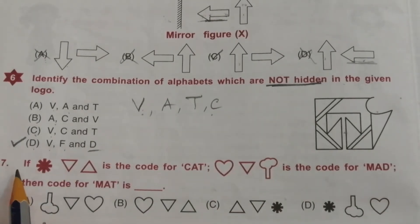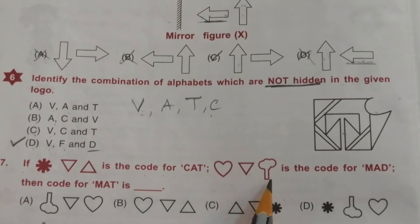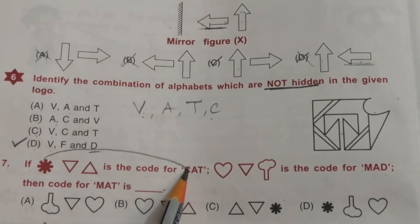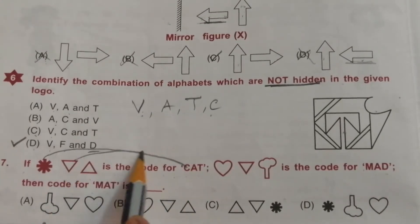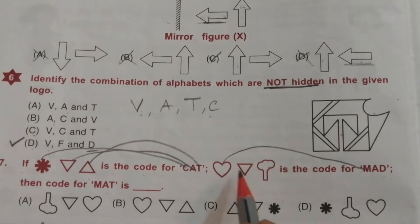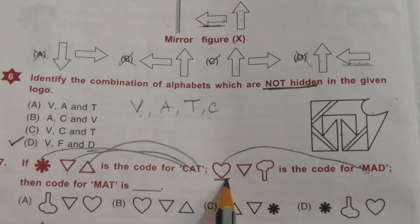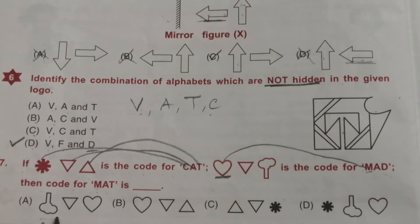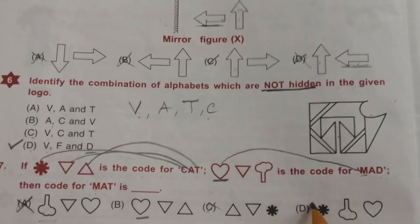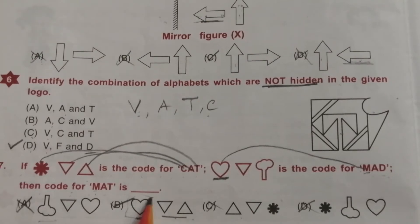Problem 7: three symbols are the code for 'cat' and another three symbols are the code for 'mad'. Find the code for 'matters'. The first symbol is C, second for A, third for T. In the second set, first symbol is M, second for A, third for D. For 'matters', M is the first symbol from the 'mad' code. So B is the correct answer — no need to check the remaining symbols.